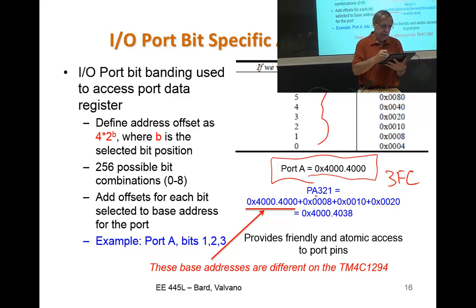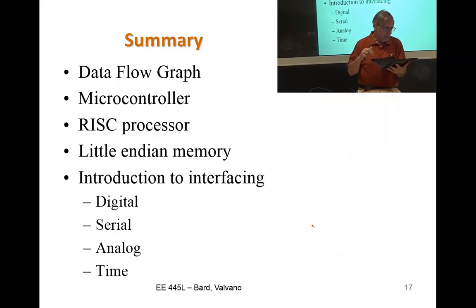But if we're interested in just some of the pins, like in this example here, port A bit 321 can be accessed both write to and read from by using the base address plus the offset for bit 1, the offset for bit 2, and the offset for bit 3. In other words, if we create an IO register, an IO name with this address, we will get port A bits 321. And it's very, very important. It's a fancy trick to solve the problem that we'll see in lab 2 with critical sections. And we'll talk about that in a couple of lectures.